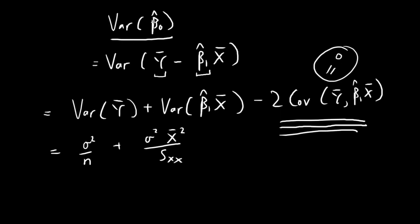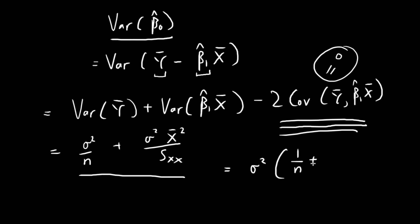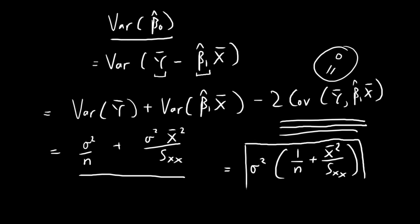So the variance of β₀̂ is just equal to the sum of the first two terms. Pulling out σ² as a common factor, I can express the final result as: Var(β₀̂) = σ² · [1/n + x̄²/Sxx].